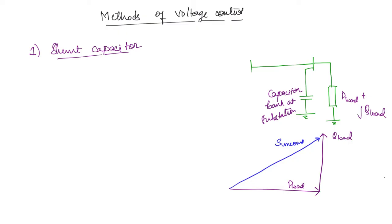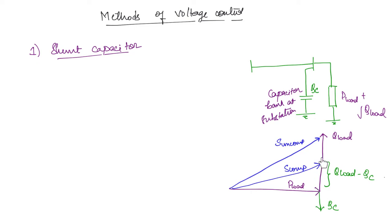When you introduce a capacitor bank, the capacitor bank has a leading power factor, so it is going to be on the opposite side. The reactive power delivered by the capacitor is Q_C. The capacitor will deliver reactive power, so the total reactive power available at the receiving end will be Q load minus Q_C. Accordingly, the complex power for the compensated system is reduced. So you can see that the reactive power is going to reduce — that is why this is called the obvious solution.